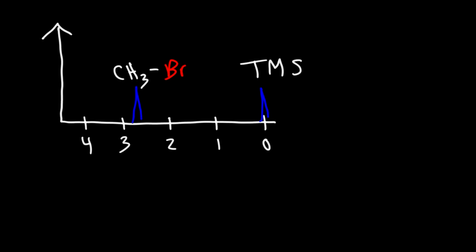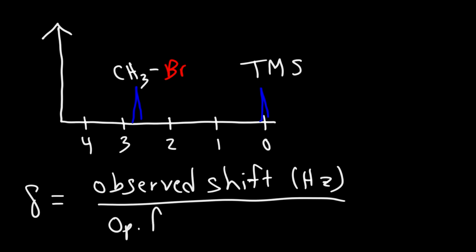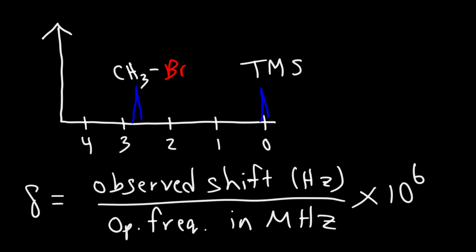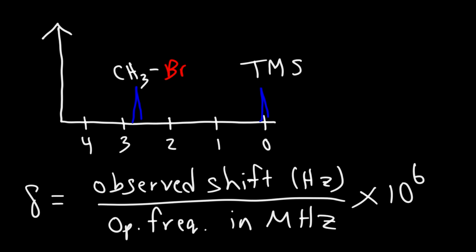In this video, we're going to talk about chemical shift. Chemical shift, represented by the symbol delta, is basically the ratio of the observed chemical shift, which is typically given in hertz, divided by the operating frequency of the spectrophotometer, which is typically given in megahertz. To get a number between 0 and 12, you're going to have to multiply this by 10 to the 6. On the x-axis, these represent chemical shift values for different signals, and the units is ppm, parts per million.